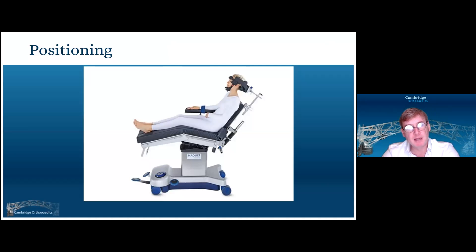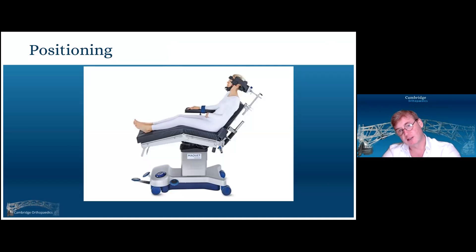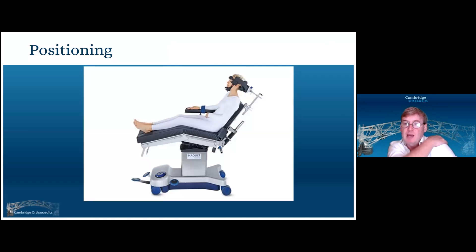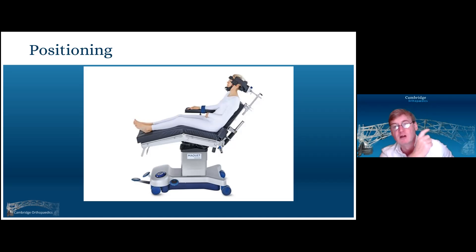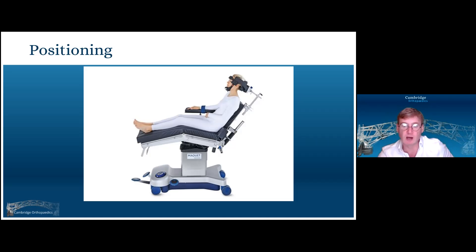As far as position goes, most people will do a beach chair or modified beach chair position when doing a delta-pectoral approach. The important things to bear in mind are the position of the head — you don't want it too extended, too flexed, or laterally flexed. You want the head nice and neutral and the patient comfortable sitting in the chair. We'll often take away the back piece so that you can get the elbow into extension if you need to instrument the medullary canal for an intramedullary nail or arthroplasty. Make sure the arm is free so it can go into extension.